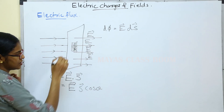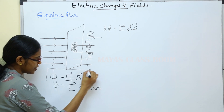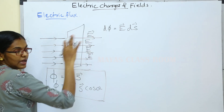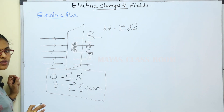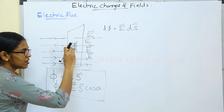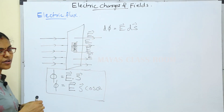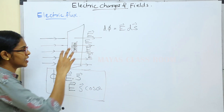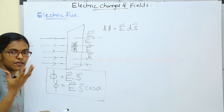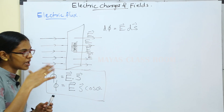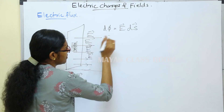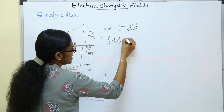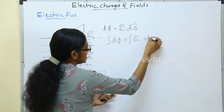These small surface elements interact with the electric field. The electric field gives us E S cos θ. For a small area element, we integrate: the integral of dφ is equal to the integral of E dot dS.